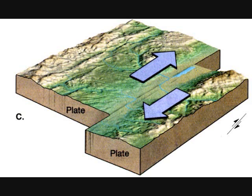In a transform fault boundary, pieces of the lithosphere grind past each other in a horizontal fashion. They grind past each other in a way that does not destroy the lithosphere. Most transform fault boundaries usually join mid-ocean ridges, and those that are active usually lie between the two offset ridge segments. Although most transform fault boundaries lie in ocean basins, there are some on the continental lithosphere — one example being the San Andreas Fault in California.